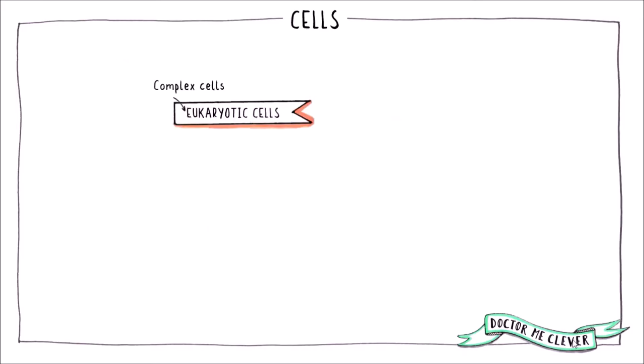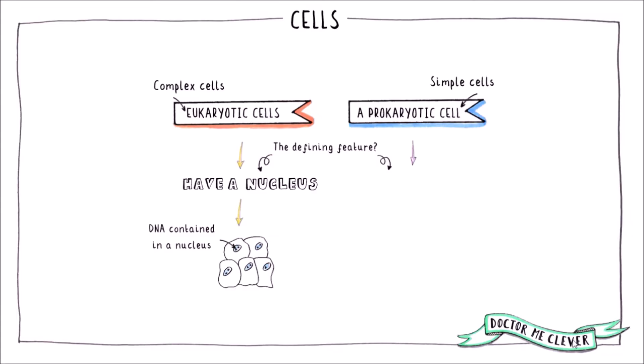Eukaryotes contain eukaryotic cells, these cells are complex, whereas prokaryotes contain a single prokaryotic cell, and these cells are simple compared to eukaryotic cells. The defining feature of a eukaryotic cell is the presence of a nucleus, which contains the DNA that controls the cell's activities.